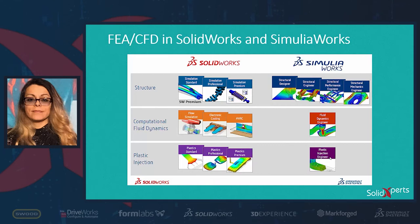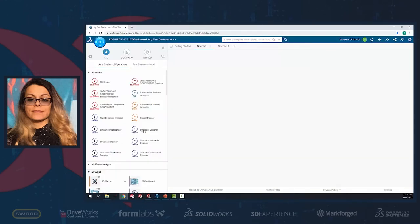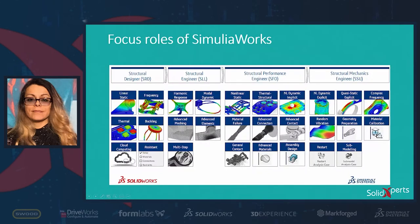If we go to the platform and look at the structural analysis roles, we have Structural Designer, Structural Engineer, Structural Performance Engineer, and Structural Mechanics Engineer. Each role lets us perform certain analyses. For example, in the Structural Designer role, we have access to Linear Static Analysis, Frequency, Thermal, and Buckling.